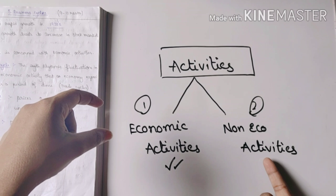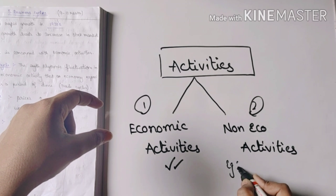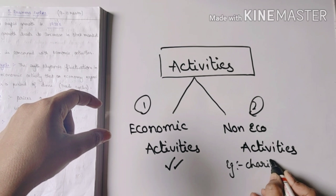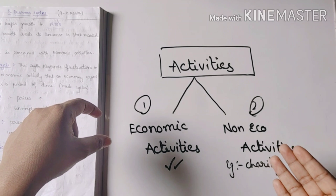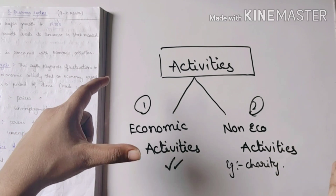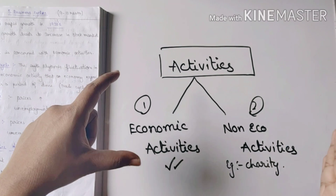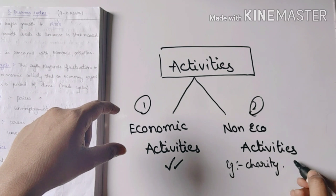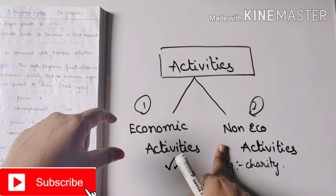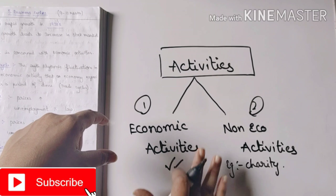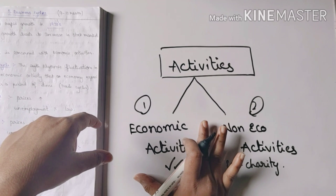Non-economic activities — for example, charity or orphanage. We choose to donate. We also do profit in a sense, but non-economic activities are not done for monetary return.